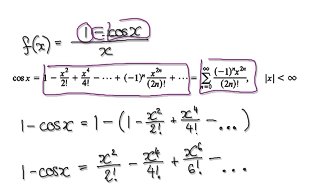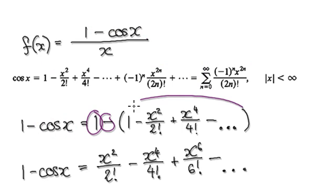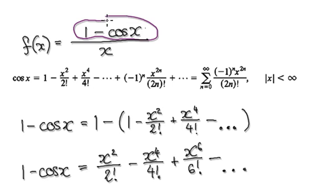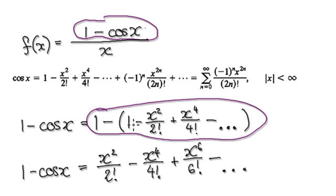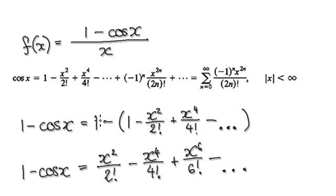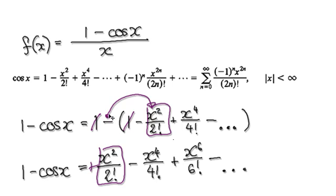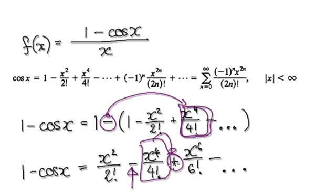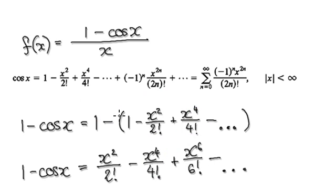When you have one take away the series — so this is our cos of x series — we're just looking at the numerator. We've got one take away our series. The two ones will cancel each other out, and then you've got a minus here, so this block here will become a positive. Then this block, because of the negative, will become a negative. The next term will be a positive, and so on.